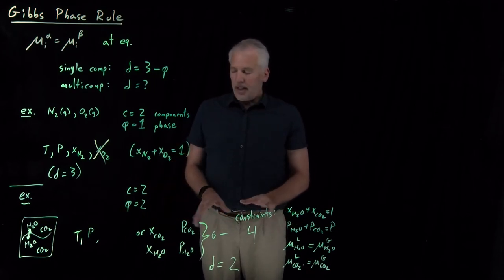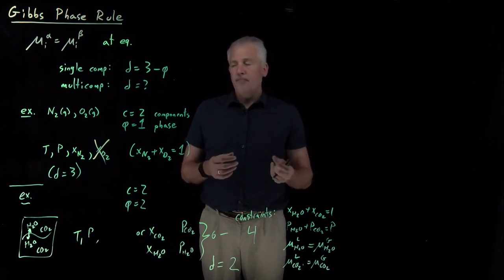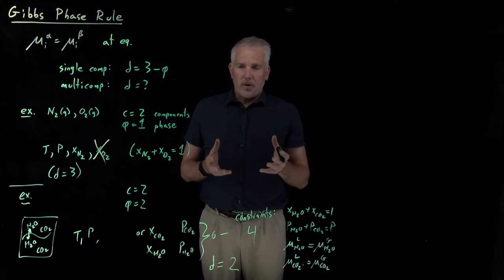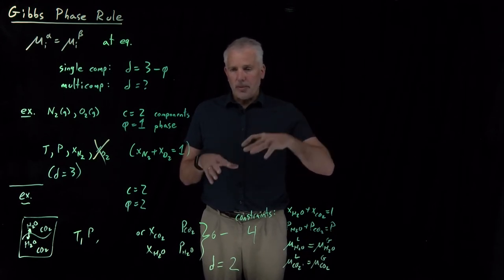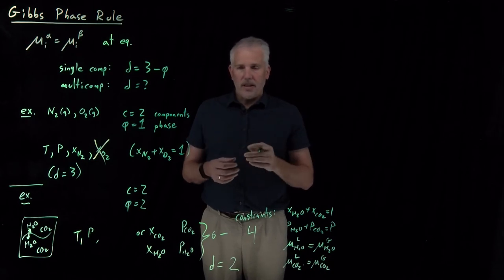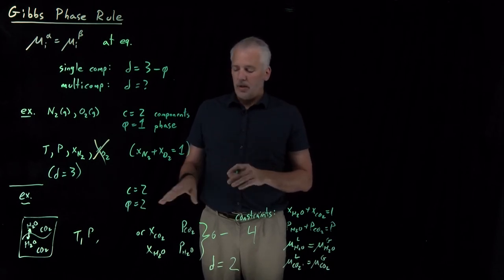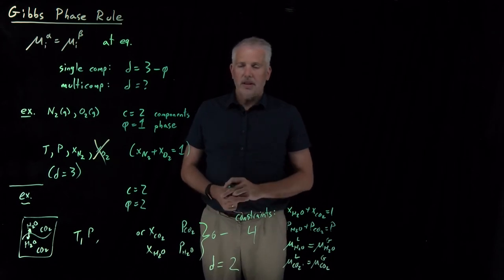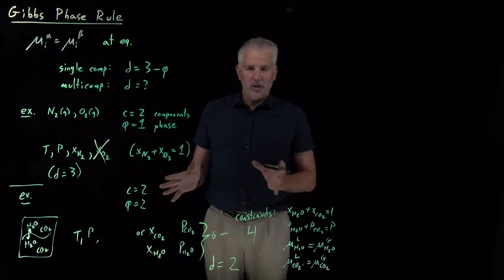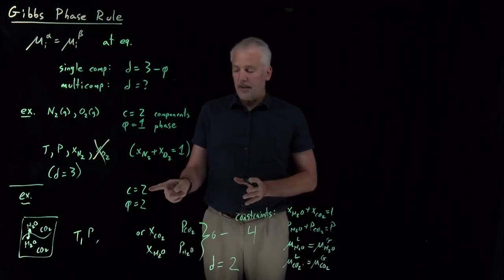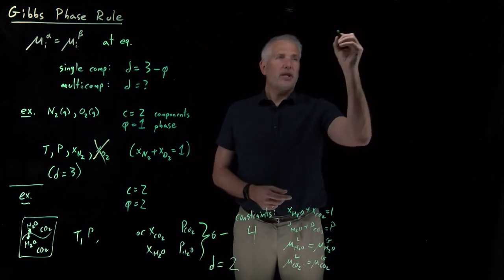That's a fairly complicated procedure, especially if you find yourself with a solution with six or seven components in equilibrium with a vapor phase for volatile components and a solid precipitated for saturated components. Writing down individual constraints can get tedious. So one thing we can do is solve this problem once and for all for any number of phases and any number of components.